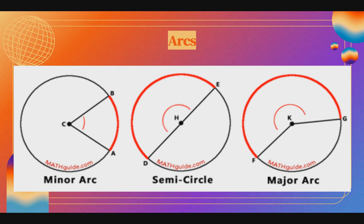And we know that the measure of our central angle is the same as the measure of the intercepted arc. So the yellow is our intercepted arc. If the measure of our central angle is 65 degrees, then 65 degrees is also the measure of our intercepted arc. Next — these are our three types of arcs: minor, semicircle, and major arc. If the measure of this angle is 70 degrees, then this arc is 70 degrees as well.